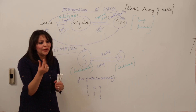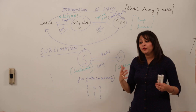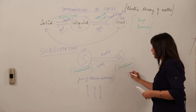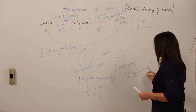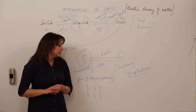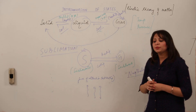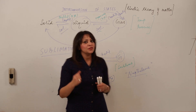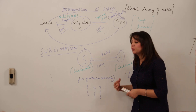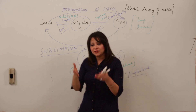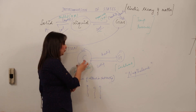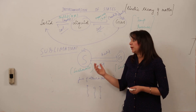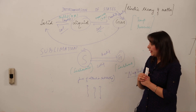A common example is naphthalene balls — the white balls your mother keeps with woolen clothes to prevent them from moths and silverfish. After a few days or months when you open the box, the balls are gone. This is because the naphthalene balls show sublimation: the solid ball gets converted into the gaseous phase, and so it seems to vanish.